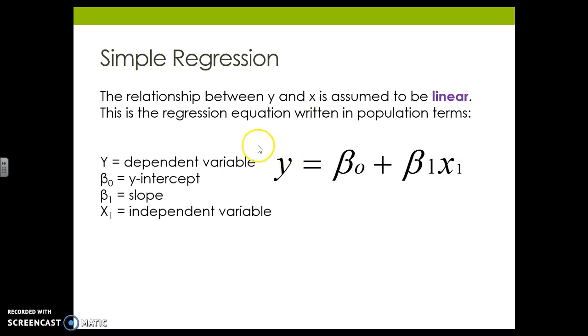So our y is the dependent variable. This is what we are trying to predict based on our x, which is the independent variable. And this is our predictor. So can this predict this? The order of these two really matters.